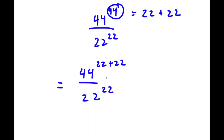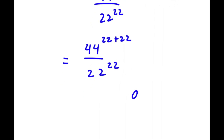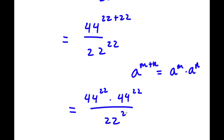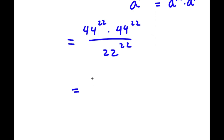If I have something in the form a to the power of m plus n, this is equal to a to the power of m times a to the power of n. So in this case, 44 to the power of 22 plus 22 equals 44 to the power of 22 times 44 to the power of 22. And now I have this over 22 to the power of 22. This is the same thing as 44 to the power of 22 over 22 to the power of 22, times 44 to the power of 22.